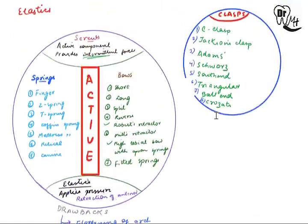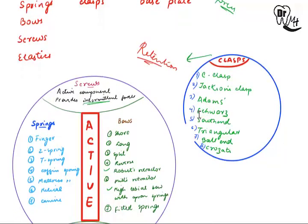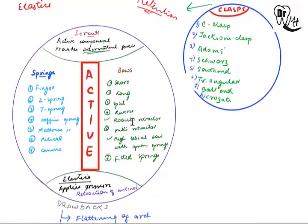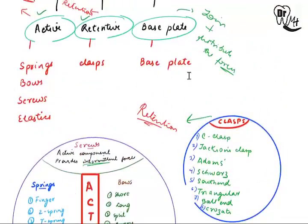Elastics provide better aesthetics as an advantage. The clasp is the component which provides retention. Types of clasps include the C-clasp, Jackson clasp, Adam's clasp, Schwarz clasp, Southend clasp, triangular clasp, ball-end clasp, and croissant clasp. These names have been given according to the shape or the person who discovered them. In the next video we will study these components in detail — the finger spring, Z-spring, and others — how they are fabricated, activated, and used, and also the base plate thickness and extent.